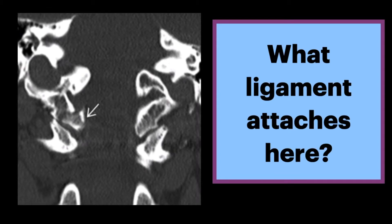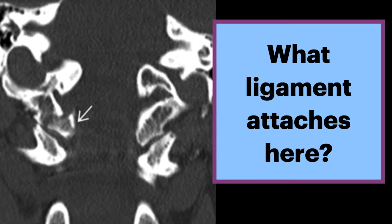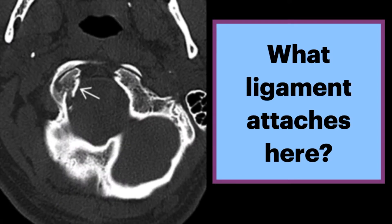What ligament attaches here is indicated by the straight arrow. This coronal CT of the upper cervical spine shows a mildly displaced fracture of the inferior and medial aspect of the right occipital condyle. An axial slice shows this mildly displaced fracture again.